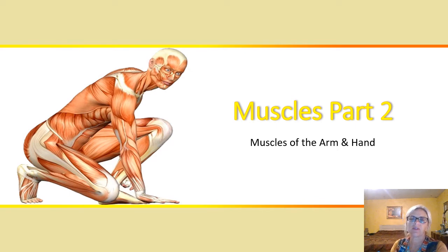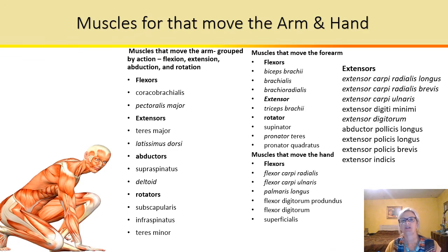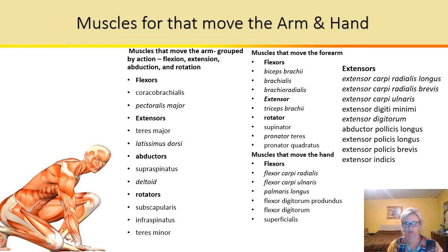All right, now we're going to be looking at the muscles of the arm and hand. You probably didn't think there was going to be that many, but there's quite a few. We have flexors and extensors, abductors and adductors, and rotators all.